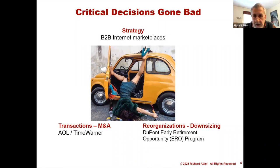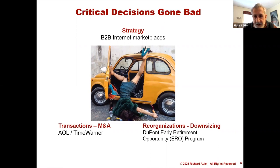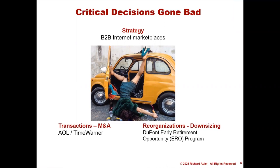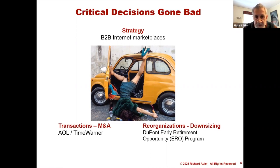Early retirement programs, or EROs, shrink workforces — a downsizing strategy popular in tough economic times because it incentivizes workers to leave voluntarily. However, EROs are deceptively hard to design and execute. DuPont carried out a notable ERO in the mid-1980s to cut costs in a stagnant economy, but their program was oversubscribed by fully 100%, which doubled costs over their plan. To add insult to injury, the ERO produced a serious drain of expert knowledge that impacted operations and proved difficult and very expensive to correct. In short, critical decisions fail because they're deeply flawed at inception or go off the rails as they're being executed, and even leaders with successful track records continue to make critical decisions that run aground.